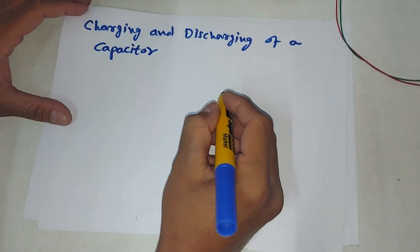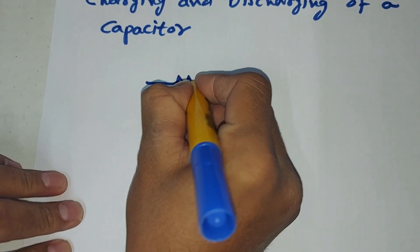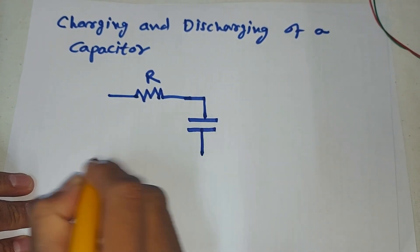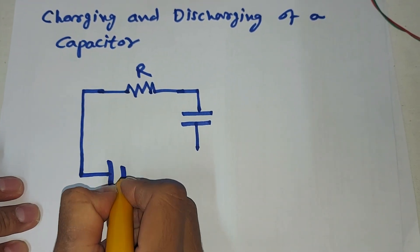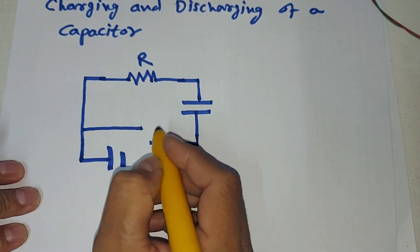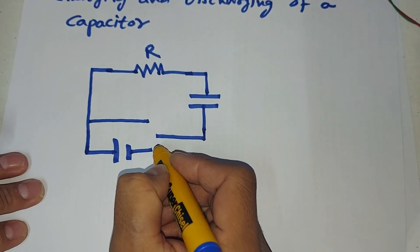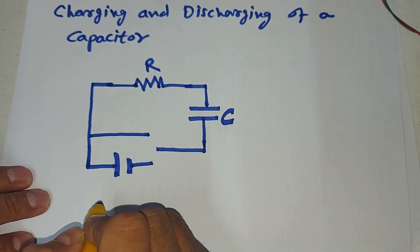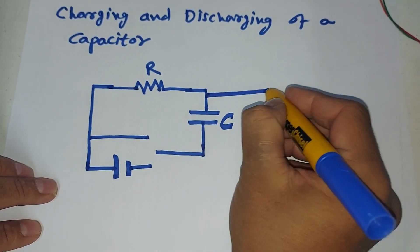For this we have to make a circuit. For this purpose we need a resistor R and a capacitor connected in series. And then we have a battery. When we connect this point to this one there will be charging of the capacitor C. And when we connect this point over here there will be discharging of the capacitor. To measure the voltage across the capacitor we have to connect a voltmeter in parallel to the capacitor.